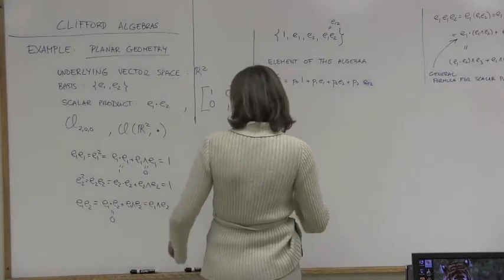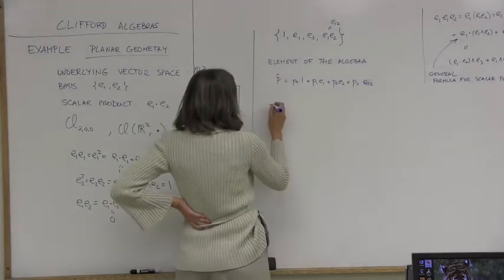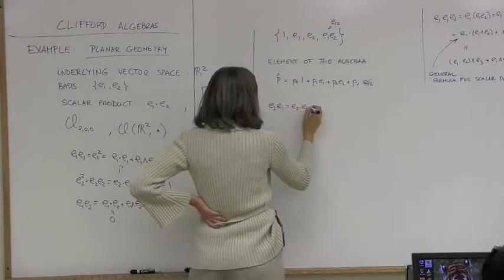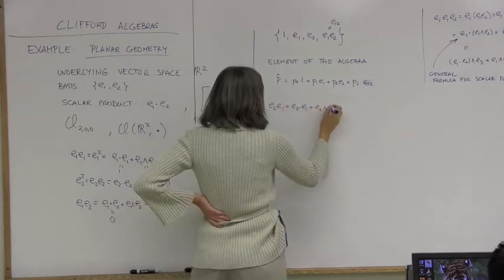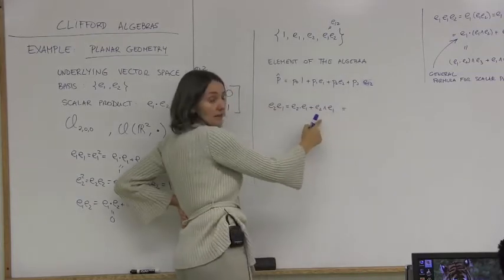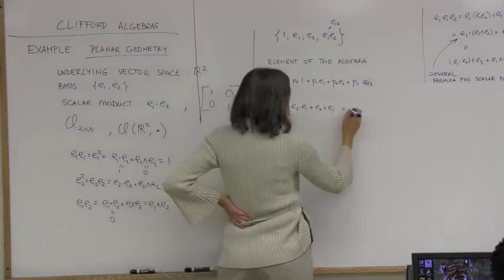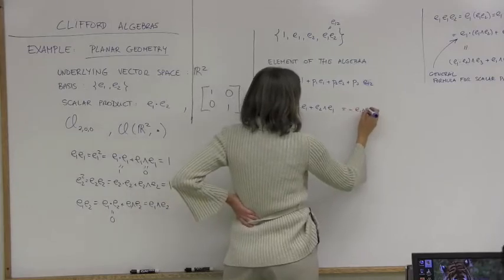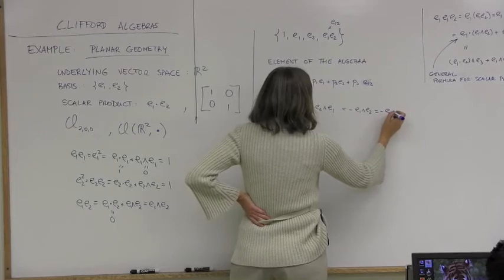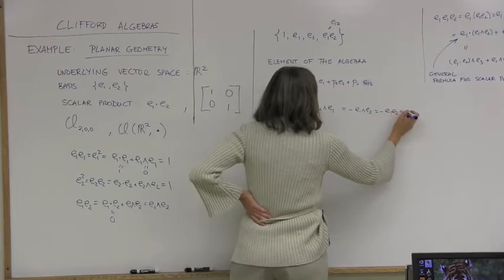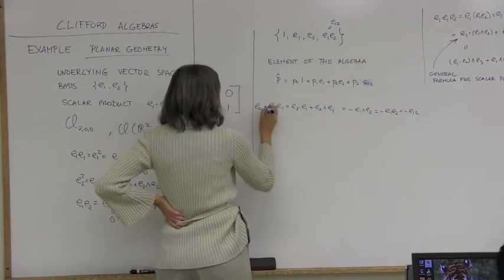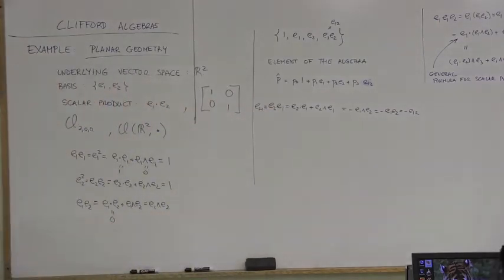Another thing to see: what is E2E1? That equals E2·E1 + E2∧E1. The dot product is zero. The wedge product is anti-symmetric, so E2∧E1 = −E1∧E2 = −E1E2. Therefore E2E1 = −E1E2.